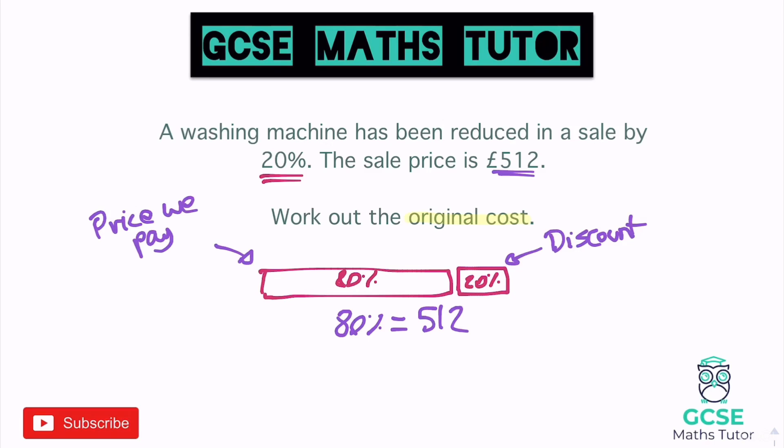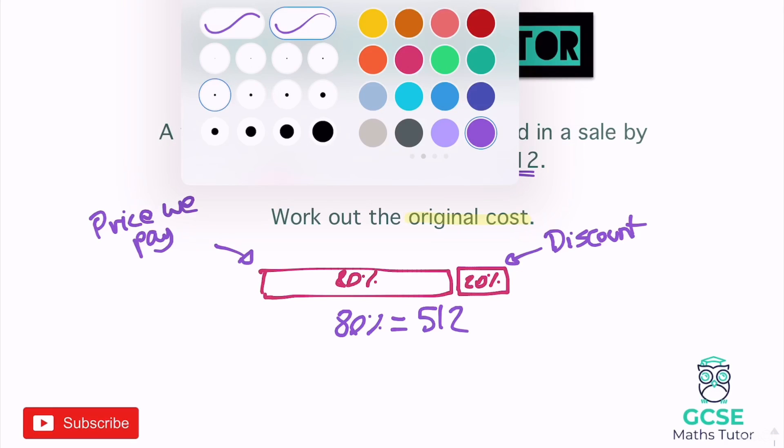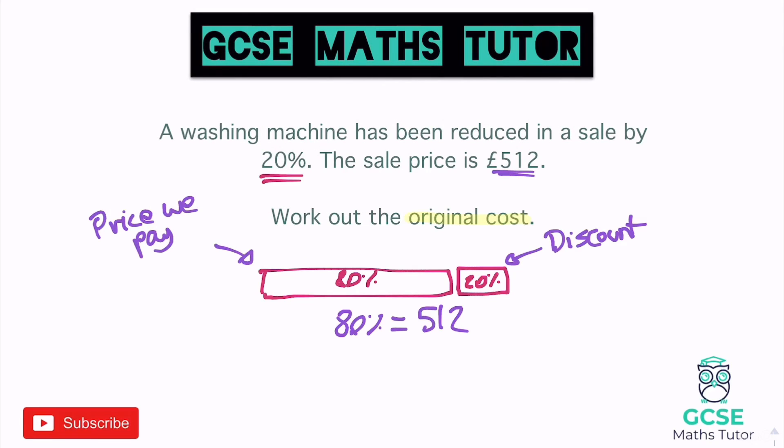Now what we've got to do is — we don't actually want to know 80%, we want to know 100%. We want the original 100% before that 20% was taken off. So in order to do that, we've got to figure out what percentage we can turn this 80% into so that we can then get back to 100. Obviously there is a number you can multiply 80% by, but without a calculator it's going to be really hard. If we can get it down to 10% or 5%, that would be really useful because we can turn that into 100% quite easily.